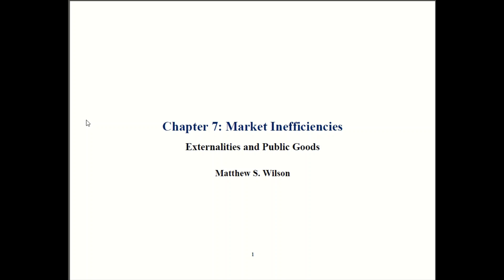This is in contrast to our previous chapters. In Chapters 5 and 6, the market outcome was the good outcome, and if the government tried to intervene with taxes, price floors, or price ceilings, that made things worse and made the outcome inefficient. This is the reverse. There are some cases where the market does not perform efficiently, and in those cases, government intervention is justified.